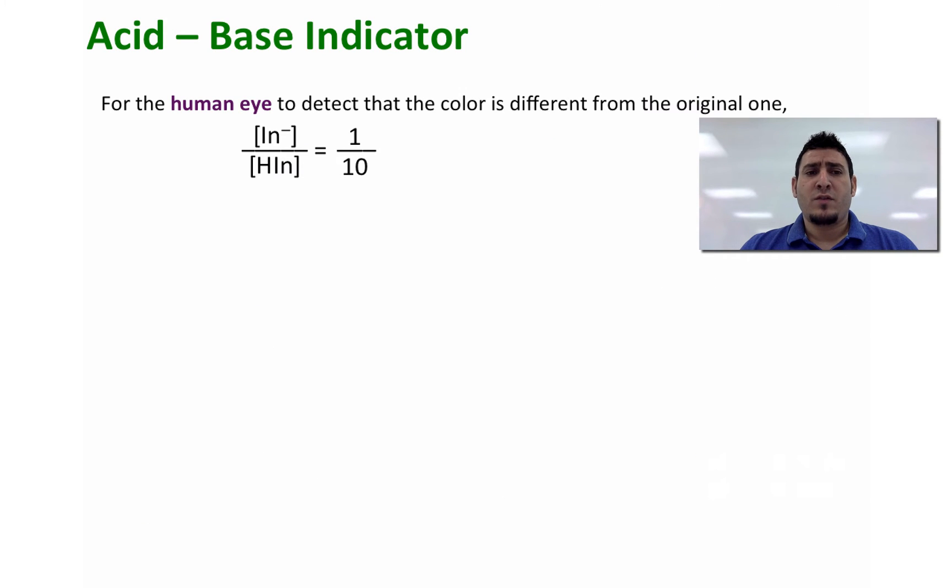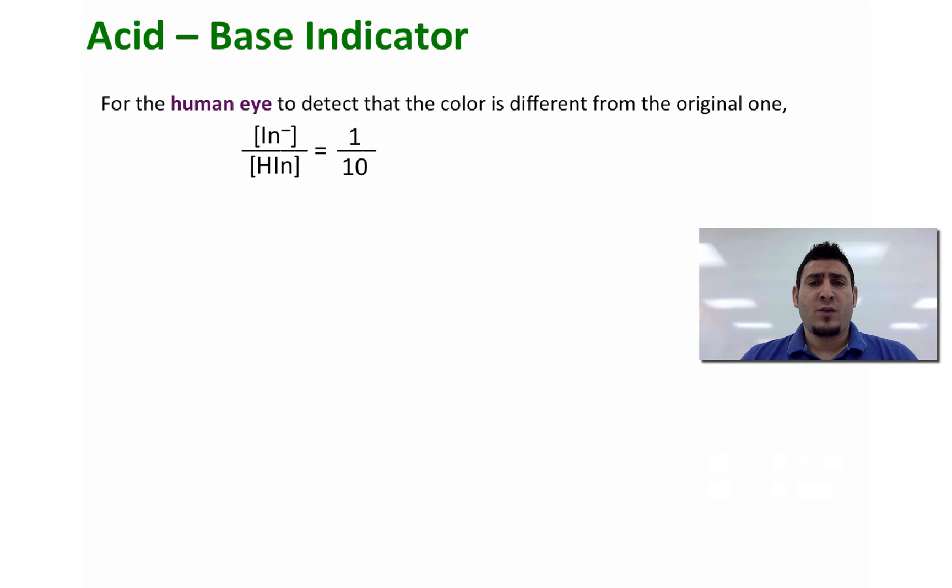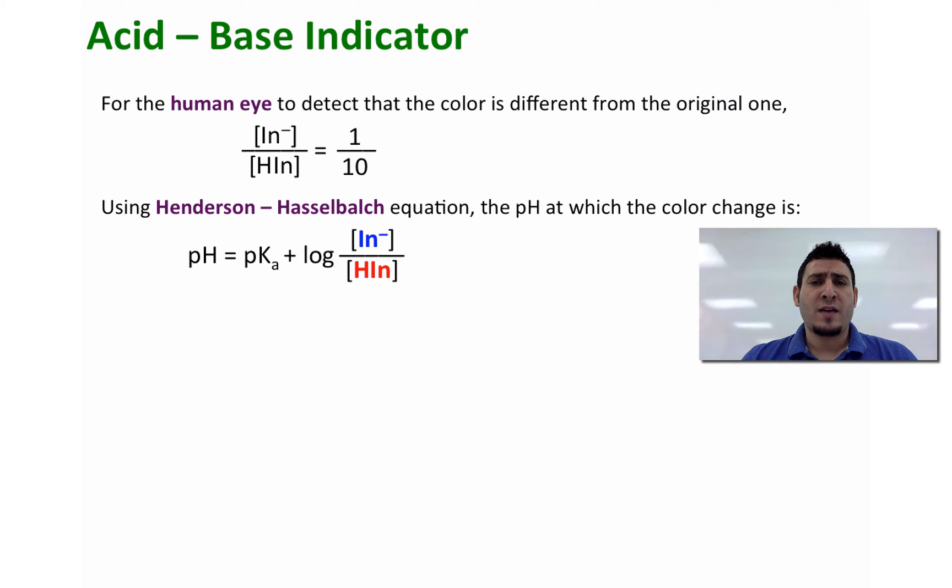Now for the human eye to detect that the color is different from the original one, the ratio between In⁻ and HIn has to be 1 over 10. If we use the Henderson-Hasselbalch equation and we calculate the pH, we can say pH equals pKa plus log of base divided by acid.